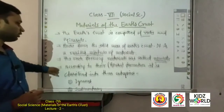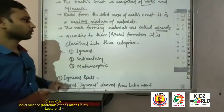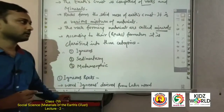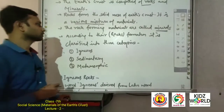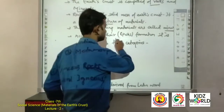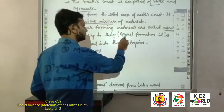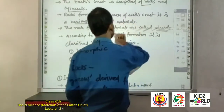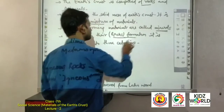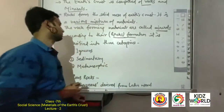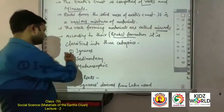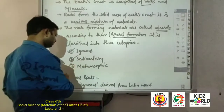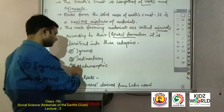According to their formation, rocks are classified into three categories. The first is igneous rock, the second is sedimentary rock, and the third is metamorphic rock.